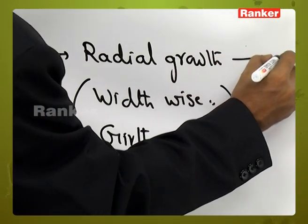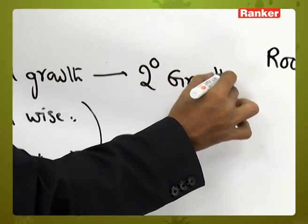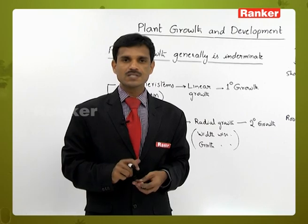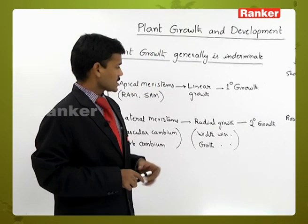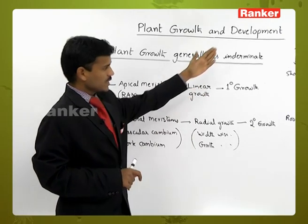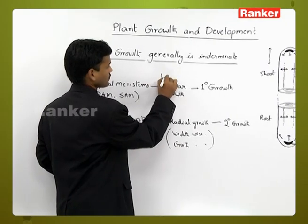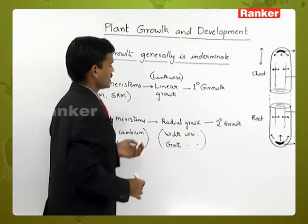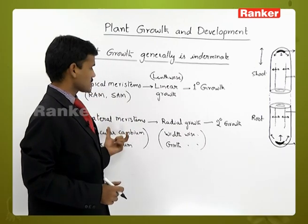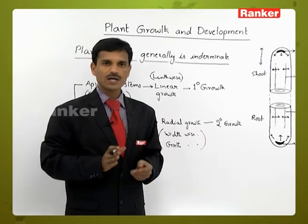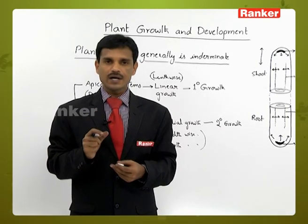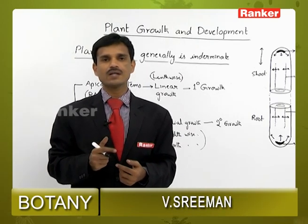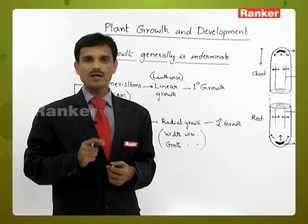This radial or girth-wise growth is called secondary growth. So we have primary growth and secondary growth. Primary growth is due to apical meristems, leading to linear or lengthwise growth. Secondary growth is due to lateral meristems, leading to radial or girth-wise growth. Growth in plants is conspicuous, very unique, and takes place throughout the life cycle. It is an important characteristic feature of all living beings.